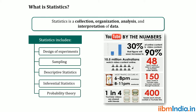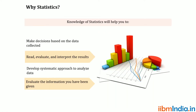400 tweets each minute contain a YouTube link — that numerical way of concluding is called statistics. Statistics includes various concepts like design of experiment, sampling, descriptive statistics, inferential statistics, and probability. Statistics comprises five modules: experimental design, sampling, descriptive statistics, inferential statistics, and probability. Statistics mainly helps to make decisions.